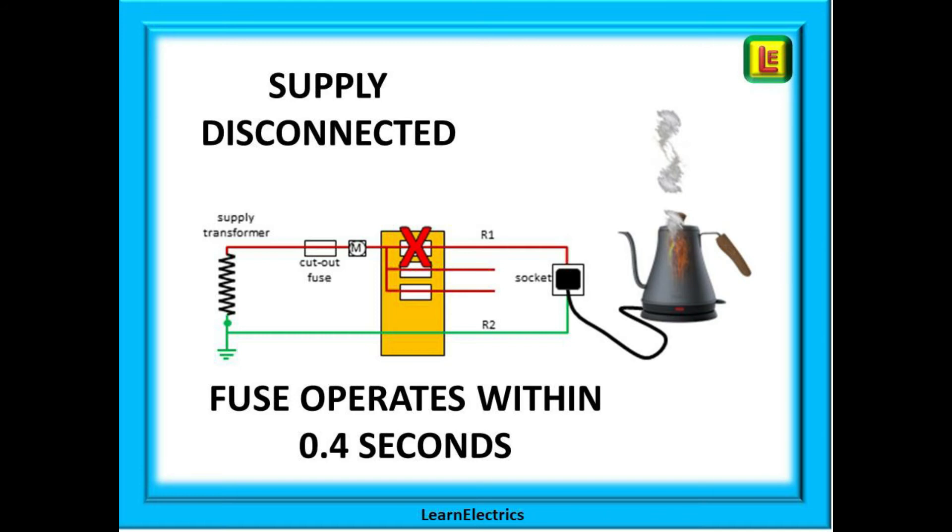If this 700 amps fault current stopped at the earth point of the transformer, nothing would happen to the fuse and you would continue to receive an electric shock. The 700 amps must return through the fuse to cause the fuse to blow or the MCB to operate. If the fault current does not complete the full loop from the fault to the supply transformer and back again to the kettle, then the fuse is never going to disconnect the supply. Think about it for a few seconds. If the 700 amps doesn't go through the fuse, then how is the fuse going to blow?